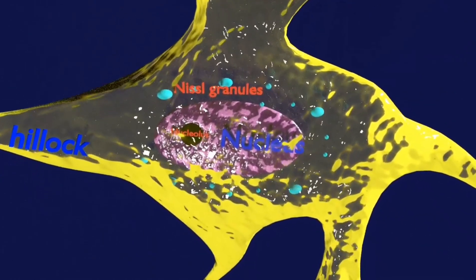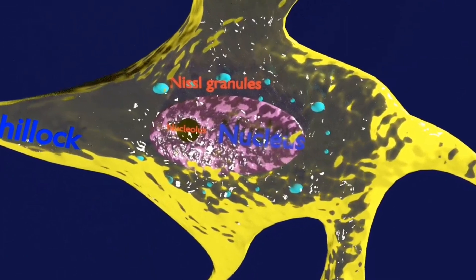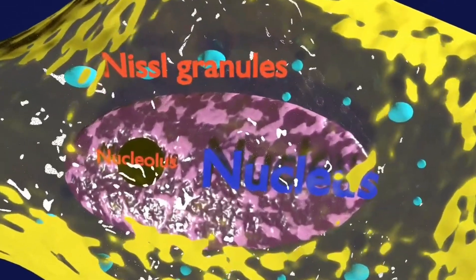Numerous microscopic clumps called Nissel bodies or Nissel substances are seen when nerve cell bodies are stained with a basophilic dye.